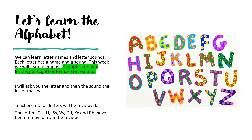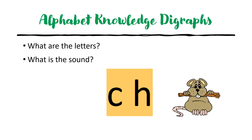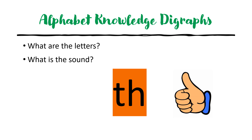Let's learn the alphabet. We can learn letter names and letter sounds. Each letter has a name and a sound. This week we will learn digraphs. Digraphs are two letters put together to make one sound. I will ask you the letter and then the sound the letter makes. Note: the letters C, L, S, V, D, X, and B have been removed from the review. What are the letters? Ch. What is the sound? Ch.